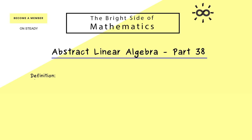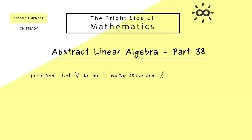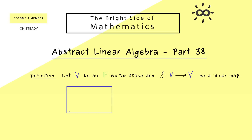Now let's immediately start with the definition of an invariant subspace. We can formulate it for any general vector space V, and the term invariant is always seen with respect to a given linear map L. This means L maps V into V again — it is just a linear transformation of the vector space V.